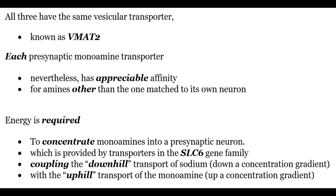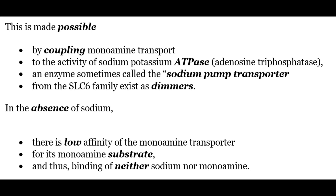In addition, each presynaptic monoamine transporter also has appreciable affinity for amines other than the one matched to its own neuron. Energy is required to concentrate monoamines into the presynaptic neurons, which is provided by the transporters in the SLC6 gene family by coupling the downhill transport of sodium — down the concentration gradient — with the uphill transport of monoamines — up the concentration gradient. In the absence of sodium, there is low affinity of the monoamine transporter for its monoamine substrate, thus binding neither to sodium nor the monoamine.